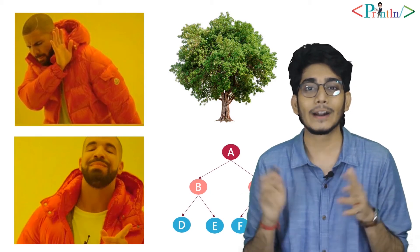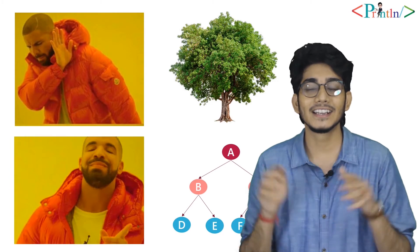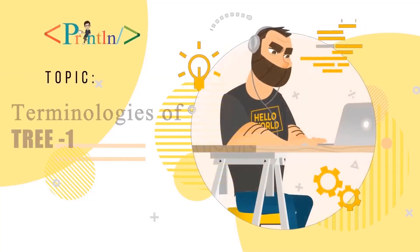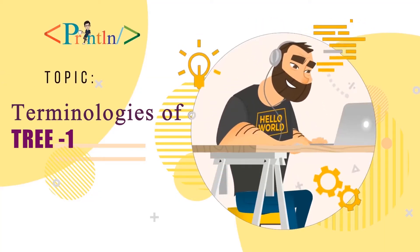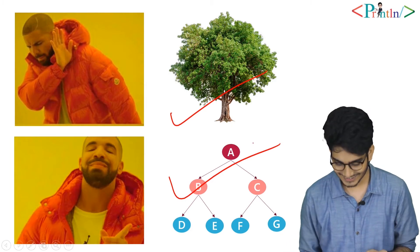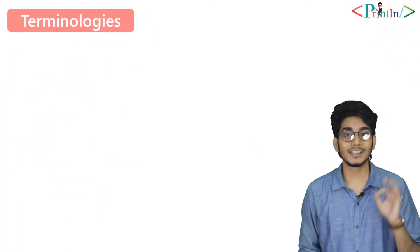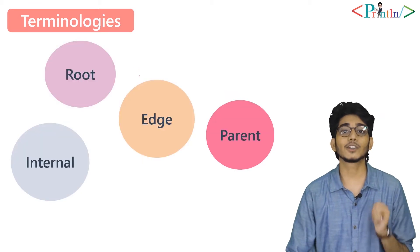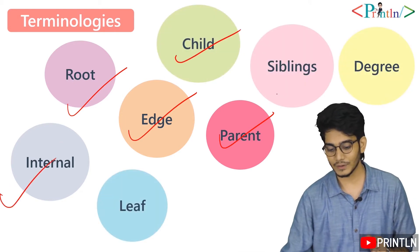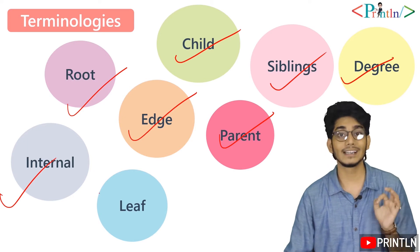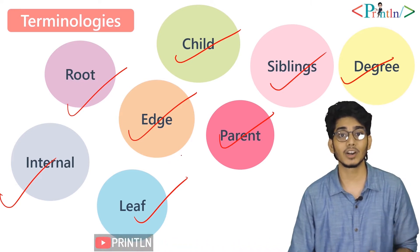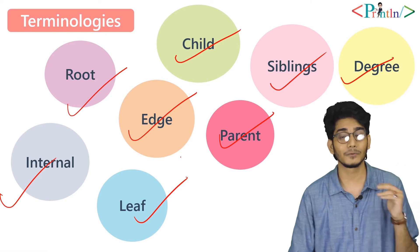In the last video we discussed what a tree is and what modules we're going to cover in this series. In this video we'll talk about tree terminologies. We'll cover root, edge, parent, internal nodes, child node, siblings, degree of a tree, and leaf nodes. I have divided these tree terminologies into two parts — this video covers the first part, and the next part will cover the rest.